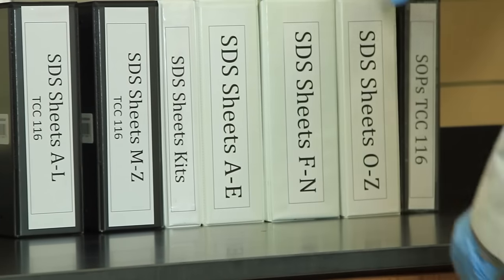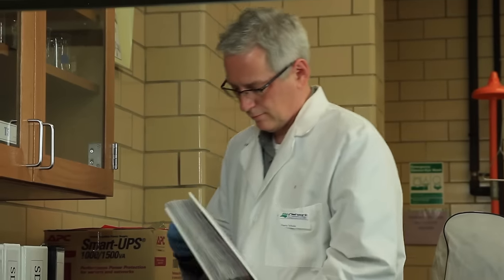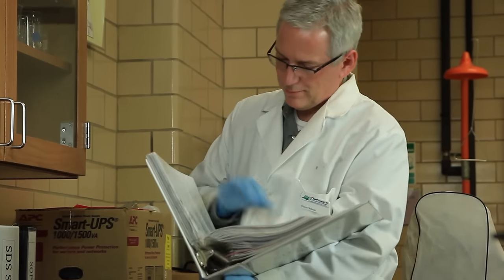The safety data sheet is a one-stop shop to find out about a chemical's properties, hazards, and safety precautions. Know the location of the safety data sheets in your lab and review them before working with a chemical for the first time.